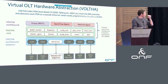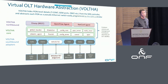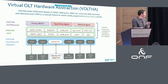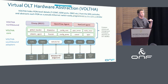VOLTHA abstracts the entire PON system as a single OpenFlow device that ONOS can control — the OLT in the central office, the fibers going down to residences, and the ONUs at the residences. The idea is to hide PON-specific configuration from the SDN controller, so things like TCONTs, GEM ports, and OMCI needed to configure data traffic across the PON are hidden down in VOLTHA, providing a simple abstraction to ONOS.